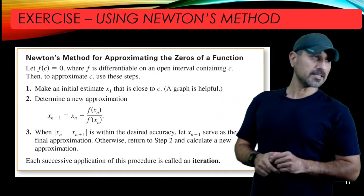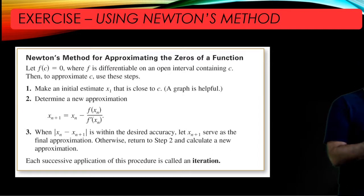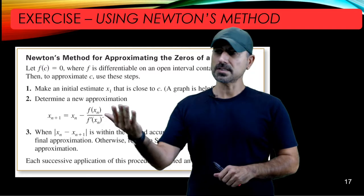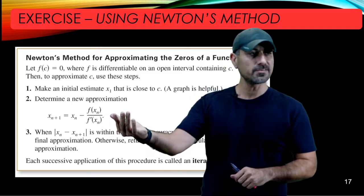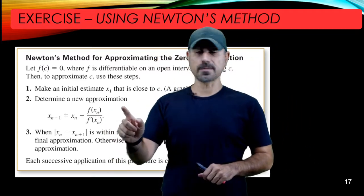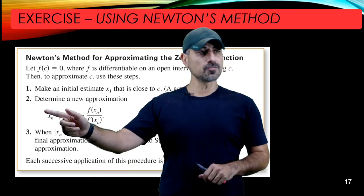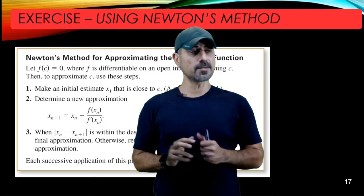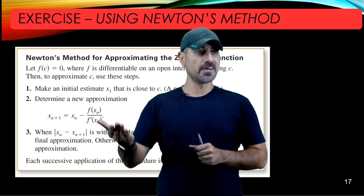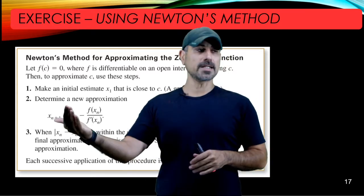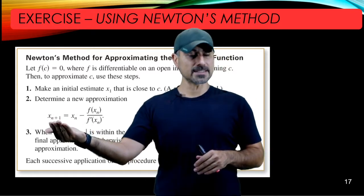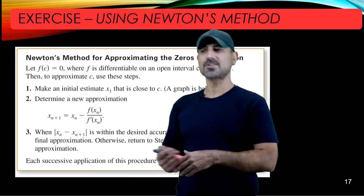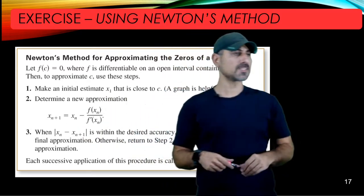To approximate c, we follow three steps. First, make an initial guess x₁ that is supposedly close to c. Then determine this iterative approximation: if n = 1, x₂ = x₁ - f(x₁)/f'(x₁). In the next step, take n = 2 to get x₃, and continue.